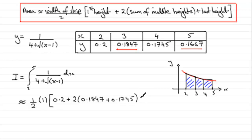And then it's plus the last height. The last height here will be 0.1667, so 0.1667.